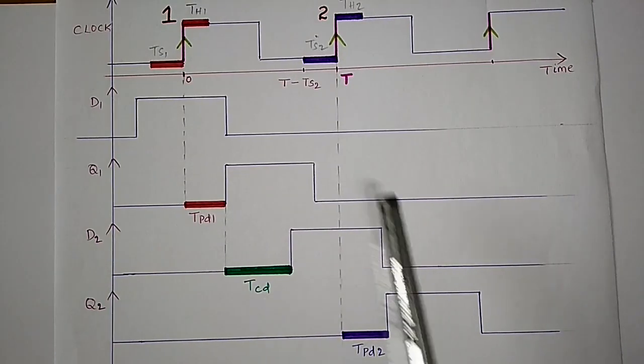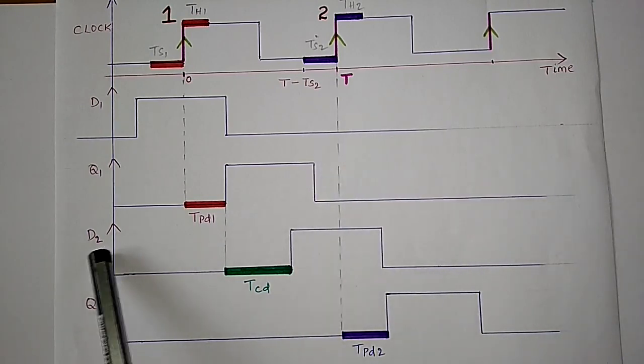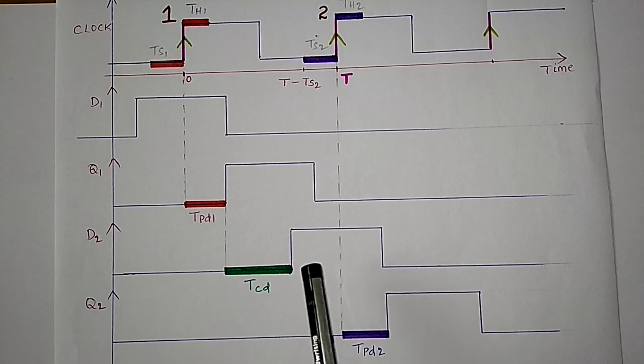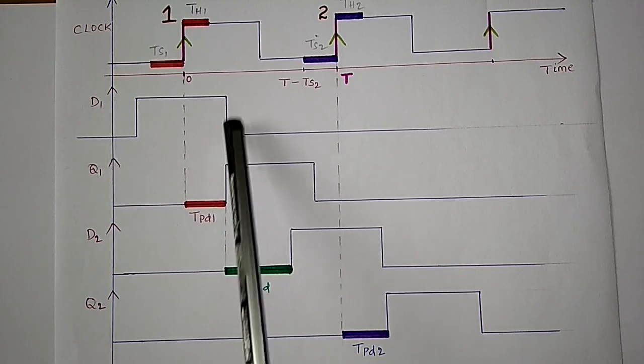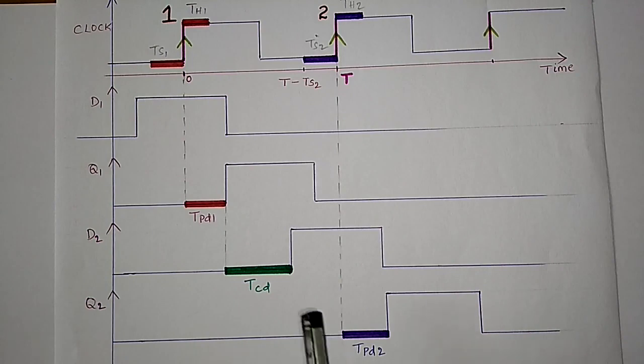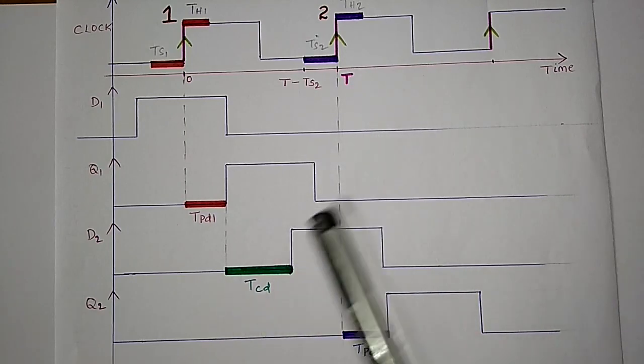And now to fix hold time violation, D2 should remain constant during TH2, or in other words the change in input signal D1 should not reach D2 before TH2. That is the minimum of the sum TPD1 plus TCD should be greater than TH2 to avoid hold time violation. Here we have to find the minimum sum for the fastest possible transition to be taken into account.